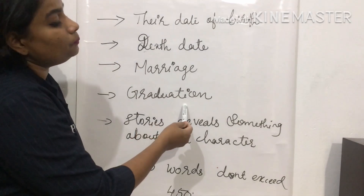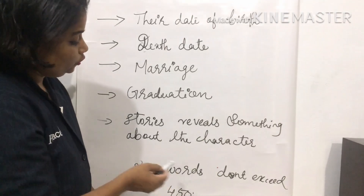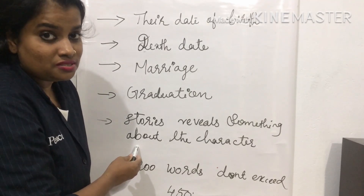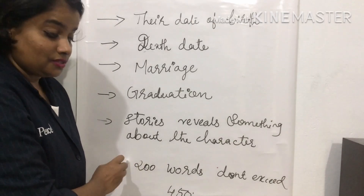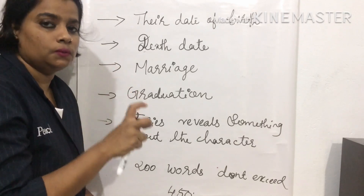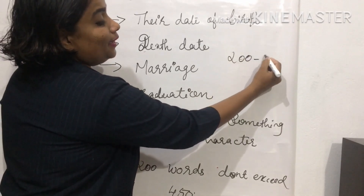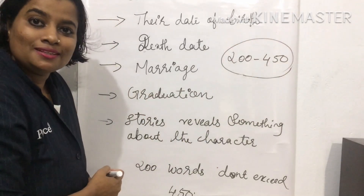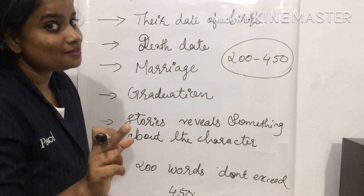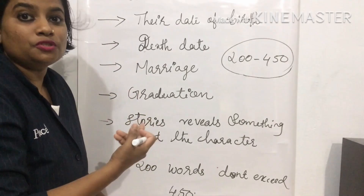Then include their graduation or educational qualifications, especially if the person was famous. Also include stories that reveal something about their character — like with Amelia Earhart, you write about her character and any notable stories. Finally, an obituary or missing report should not exceed 450 words. You must use between 200 and 450 words — it should be short and within that limited word count.